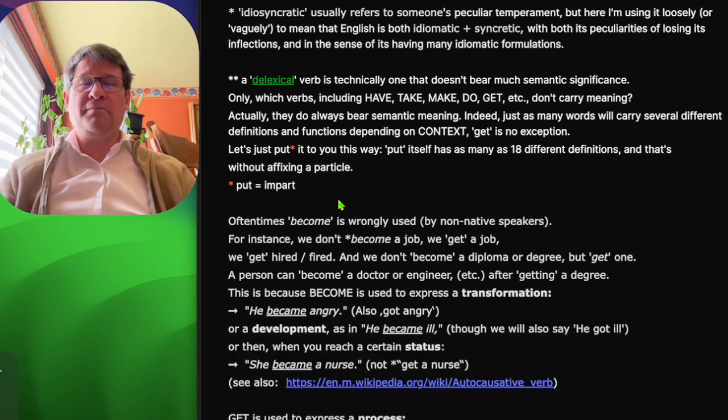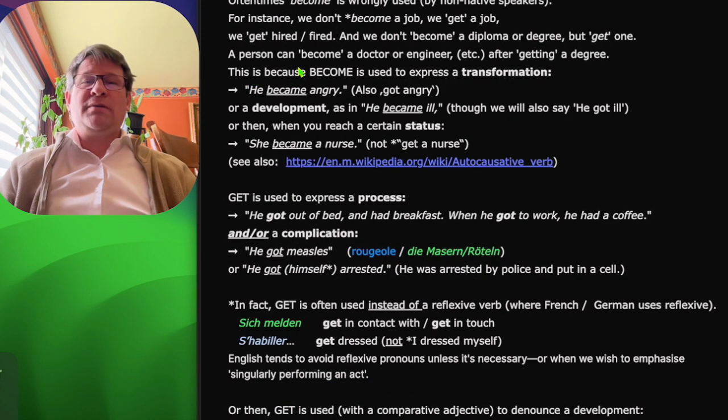Oftentimes, become is wrongly used by non-native speakers. For instance, we don't become a job, we get a job, or we get hired or fired. And we don't become a diploma or degree, but get one. A person can become a doctor or engineer, etc., after getting a degree.